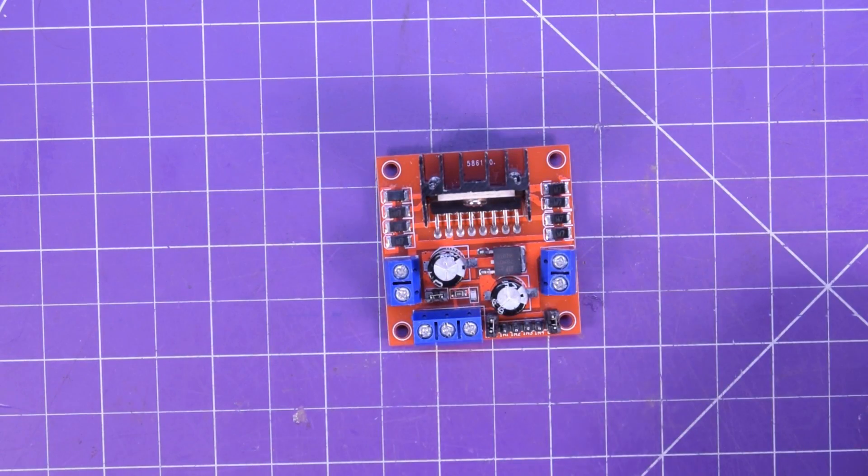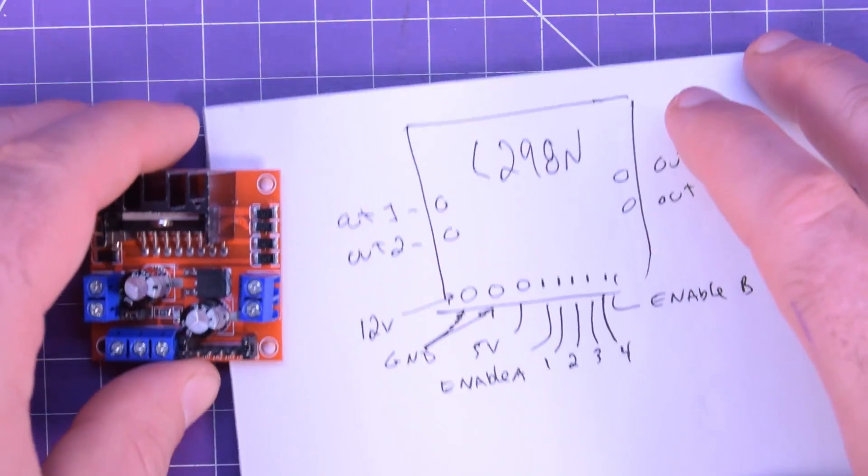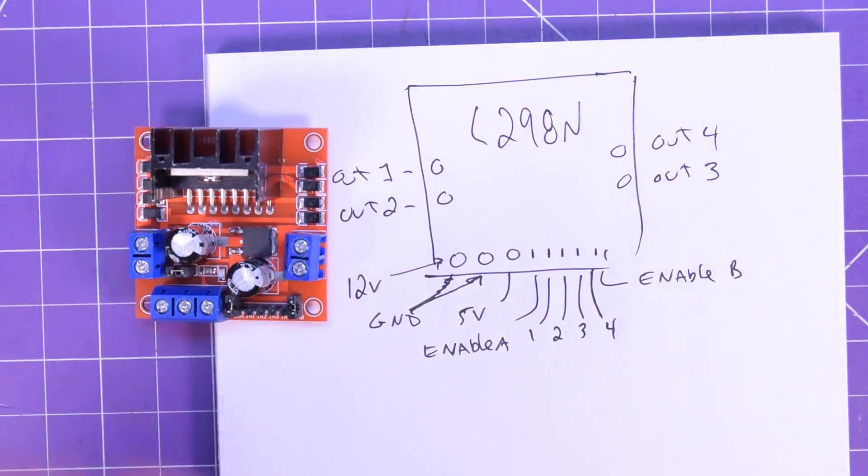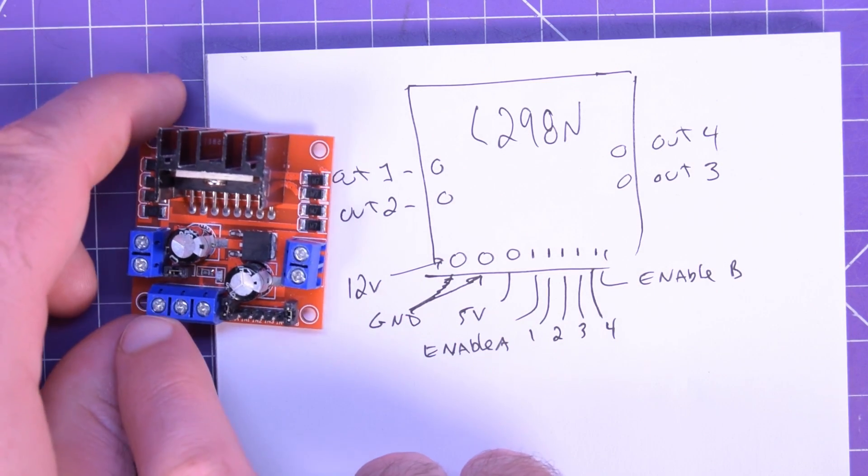So first and foremost, let's do a little bit of the tour of this module. So here you've got 12 volt, ground, and 5 volt. That's these three pins here.